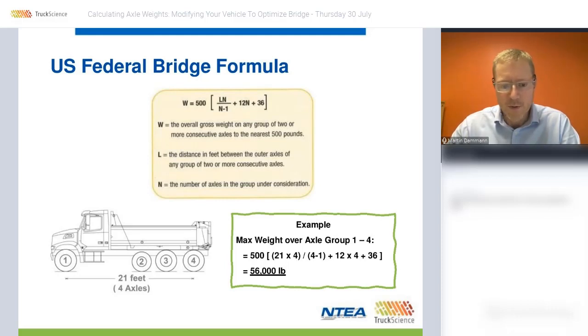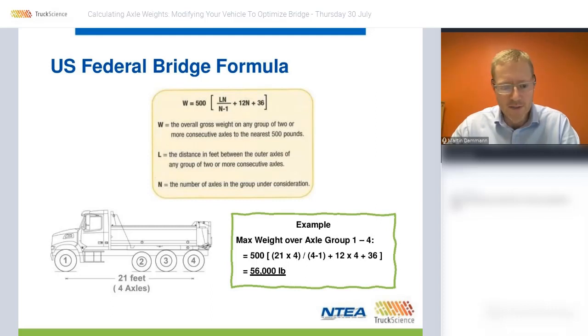When we substitute those values into the bridge formula, we get a maximum limit of 56,000 pounds. The same principle can be applied for all the other axle groups in this vehicle combination.